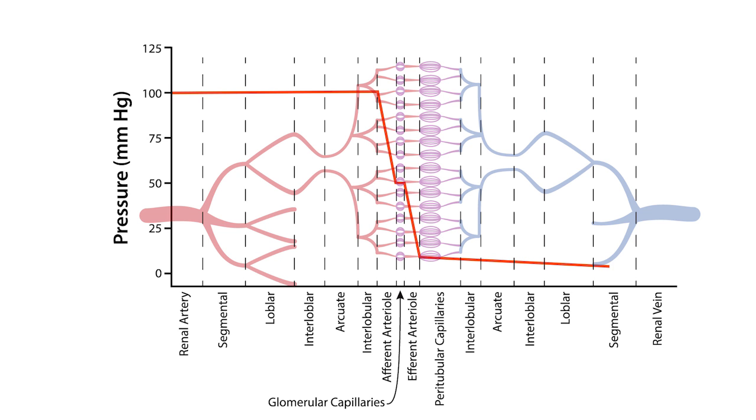This graph clearly shows that the largest changes in pressure within the renal vasculature occur along the afferent and efferent arterioles. These two arterioles that flank the ends of the glomerular capillary play a central role in maintaining glomerular capillary pressure constant.